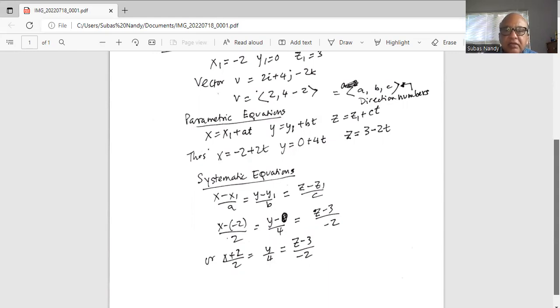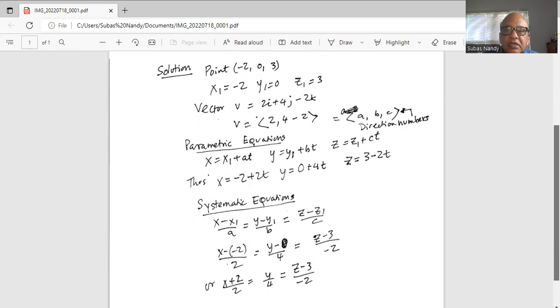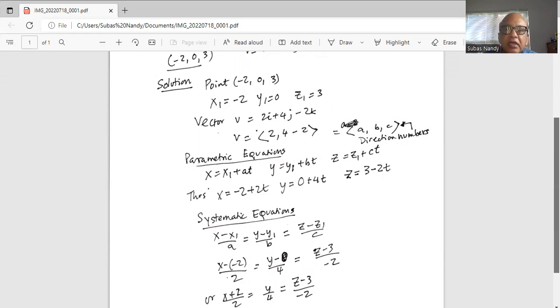So these are the set of symmetric equations for the line which passes through x1, y1, z1, and parallel to the given vector.